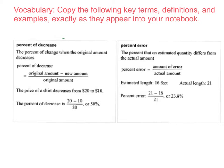Continue copying the last two key terms, definitions, and examples exactly as they appear. The percent of decrease is the percent of change when the original amount decreases. Be sure you copy the formula and the example. The percent error is the percent that an estimated quantity differs from the actual amount. Be sure you copy that formula as well as the example.